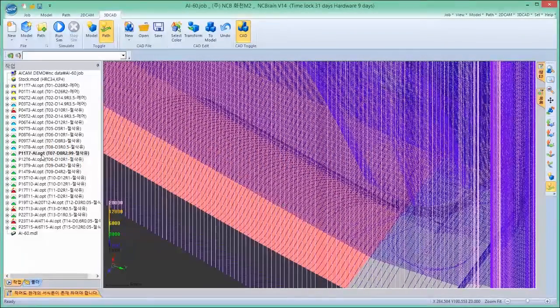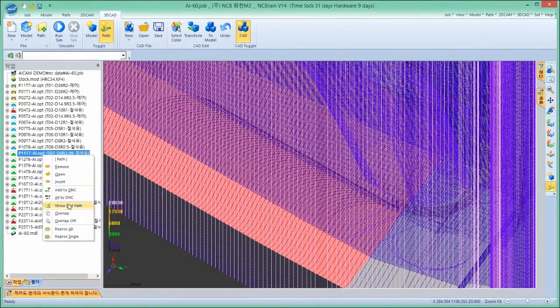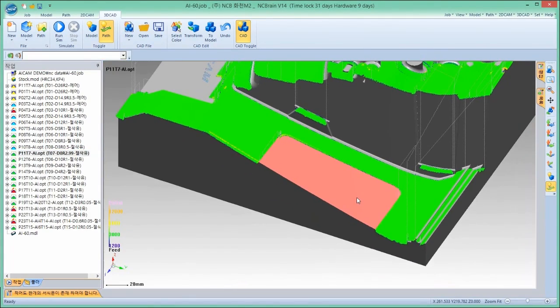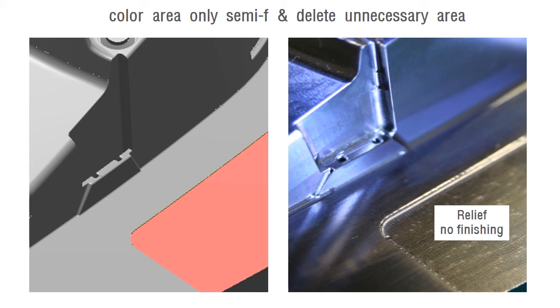Sometimes, there are unnecessary areas of relief and finishing. You can see the toolpaths deleted with recognition of the colored relief area. Then, the relief can be done only with semi-finish. The designer can make them without finishing or rest finishing operation on purpose.